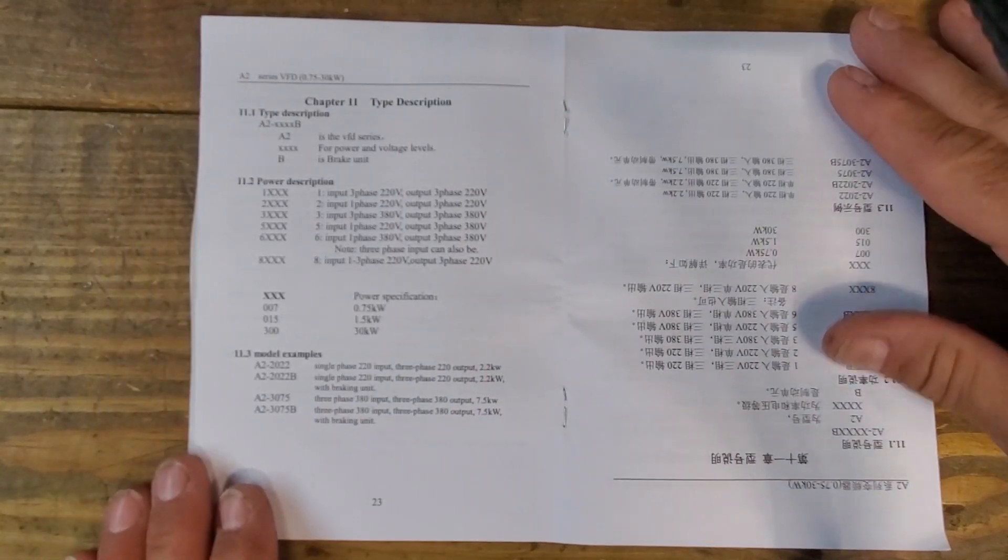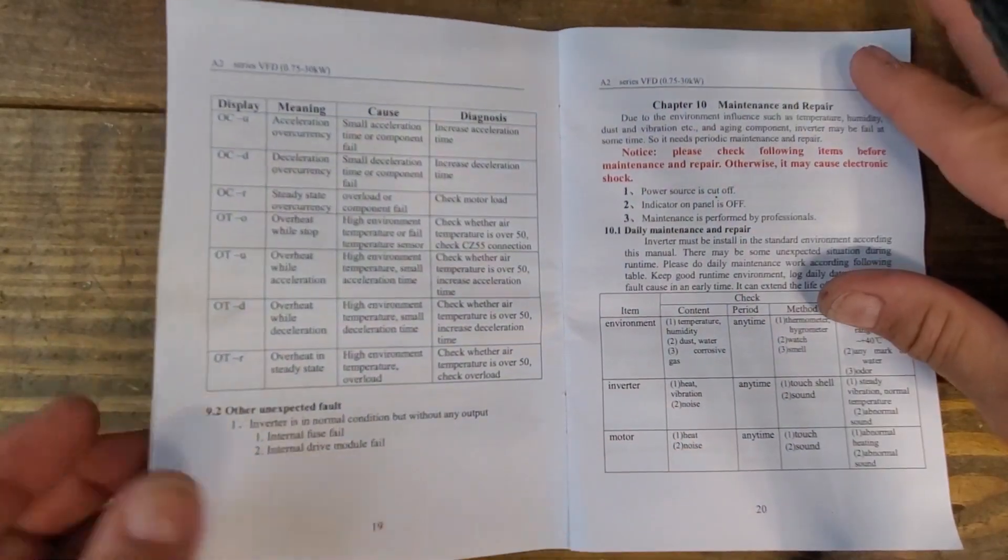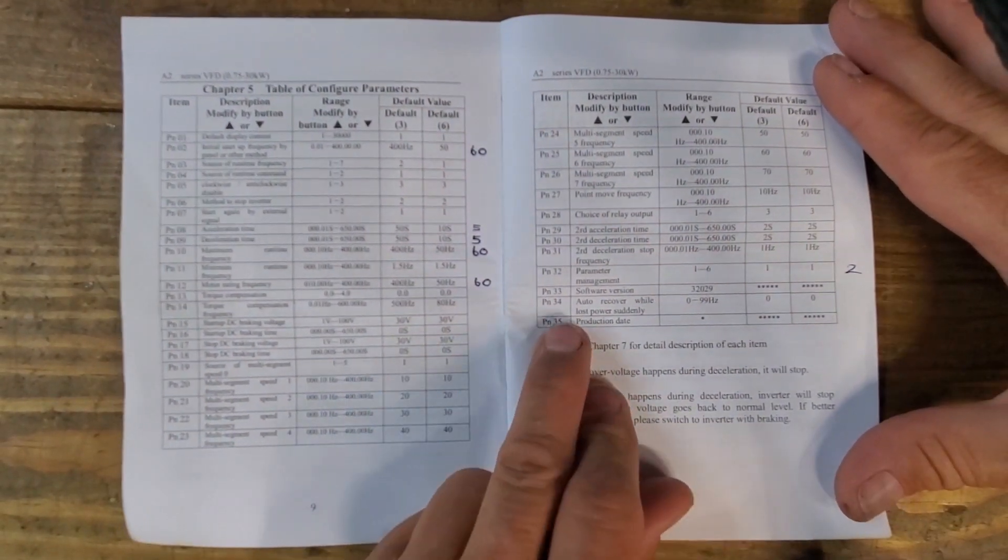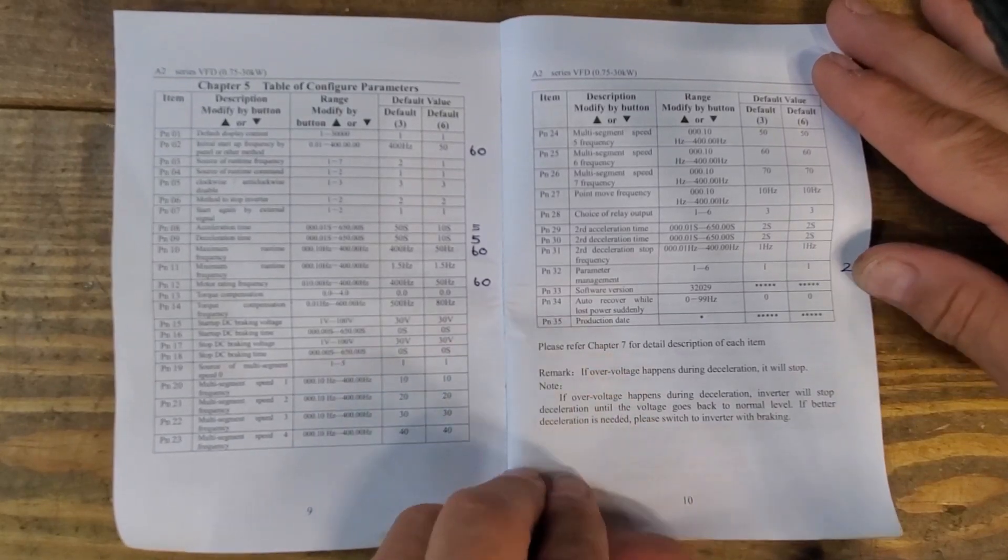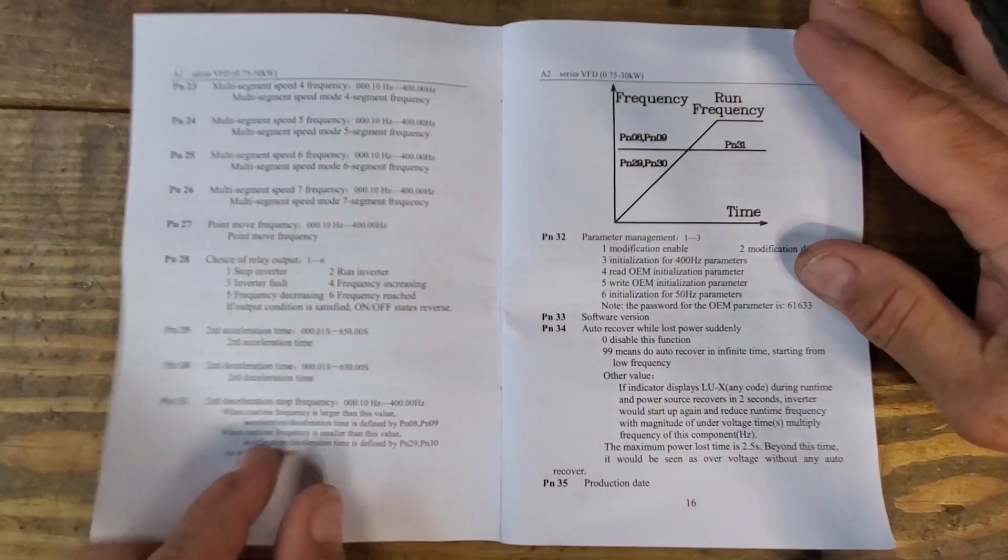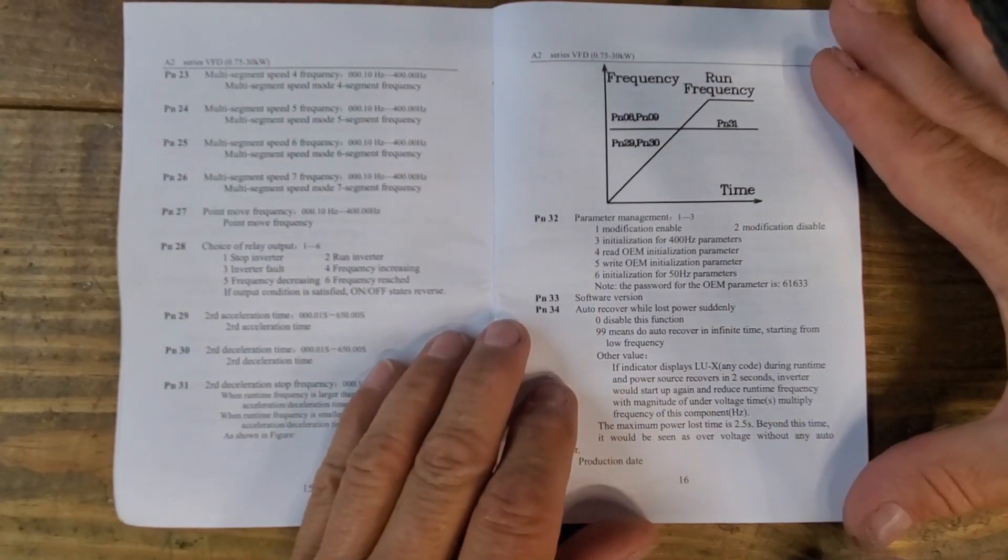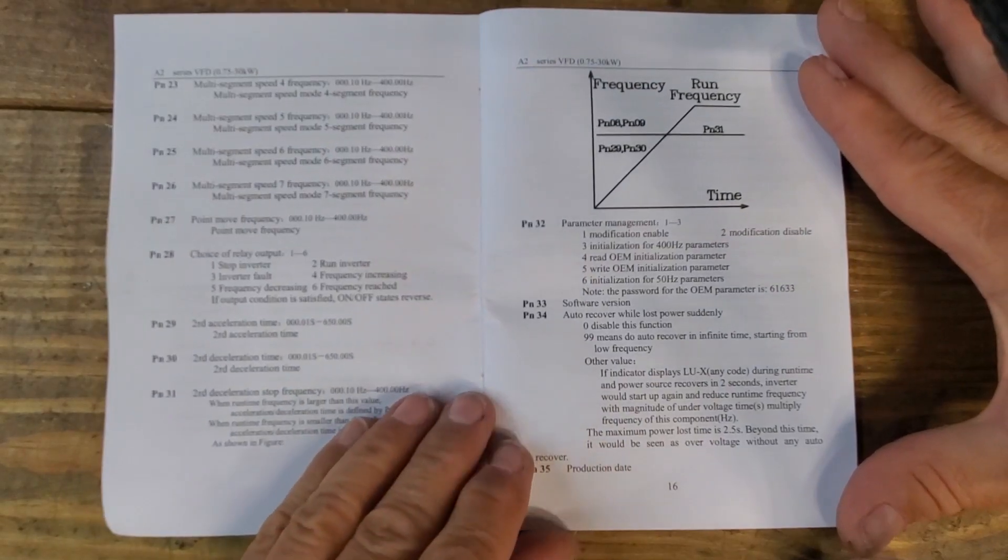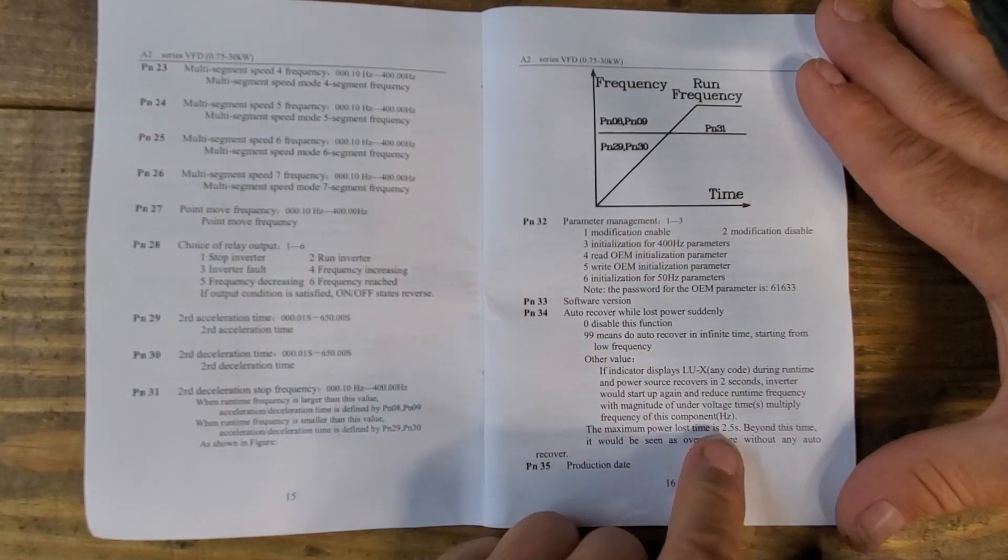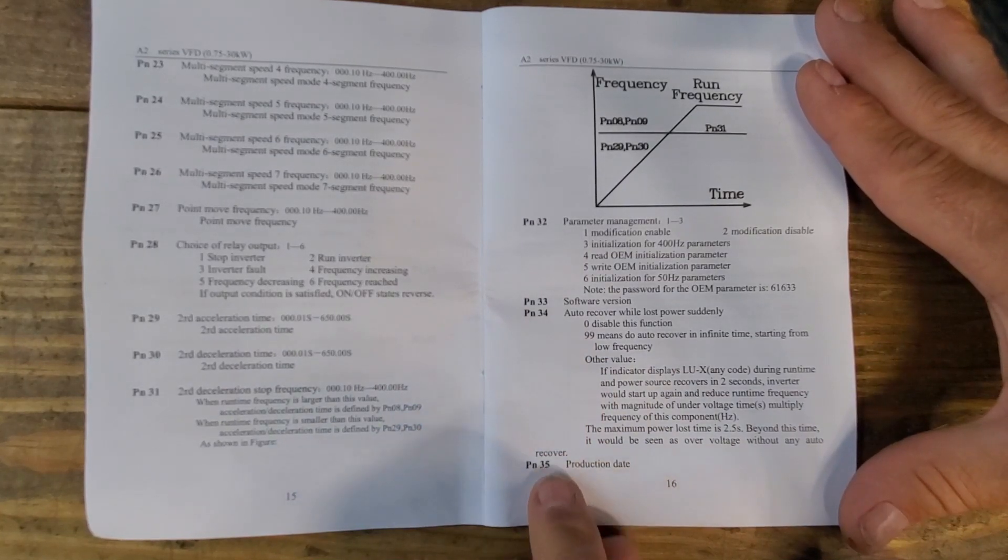And there we are. Now we're on to the Chinese part. One question that I did have. If I just come back. The PN34. If we look at PN34. Someone asked, can it be set so it will auto recover after a power loss? If you set PN34 to anything other than zero or 99, it should recover as long as the power comes back within two and a half seconds.